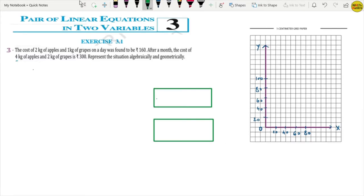Now come to question number 2. What it says: the cost of 2 kg apples and 1 kg grapes on a day is found to be Rs. 160. What do we take? The cost of 1 kg apple, how much 1 kg apple? Rs. X. And the cost of 1 kg grapes is Rs. Y.